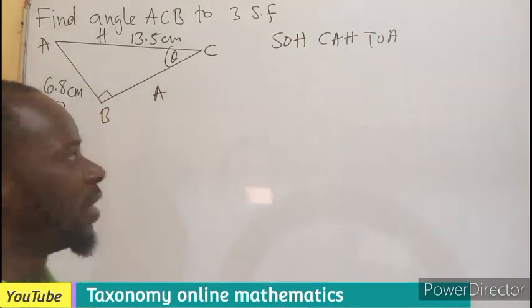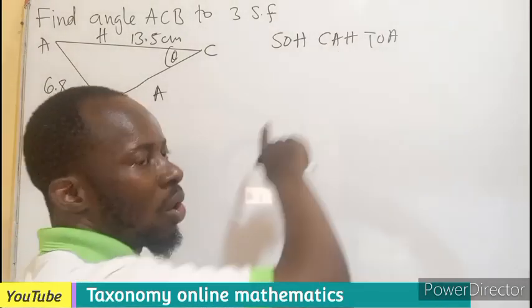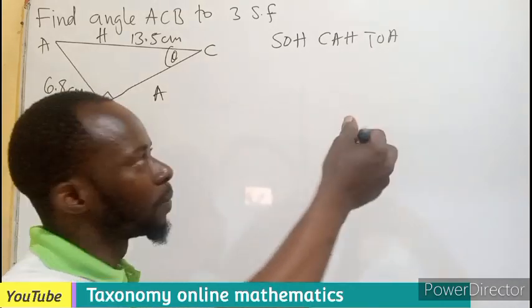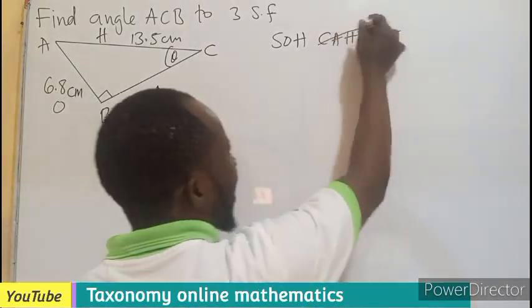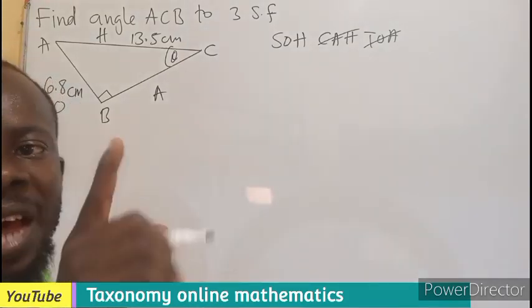The SOHCAHTOA. So since I am not interested in the adjacent, I will be canceling out any of the acronyms that contain A. You can see A is here, A is here. Meaning the ideal ratio to use in this case will be sine.